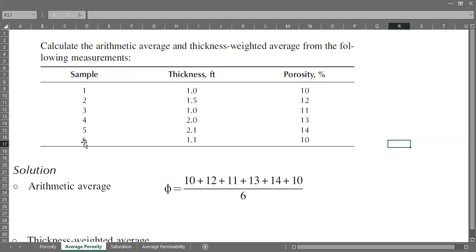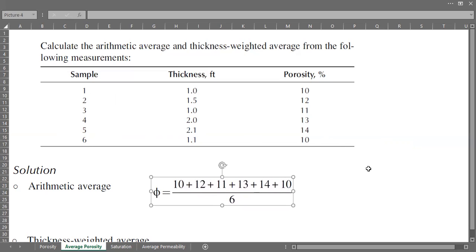Usually we use arithmetic averaging. If we use arithmetic averaging, it will be like this: we just sum all the porosity values and divide by the number of measurements or samples. So let's calculate.